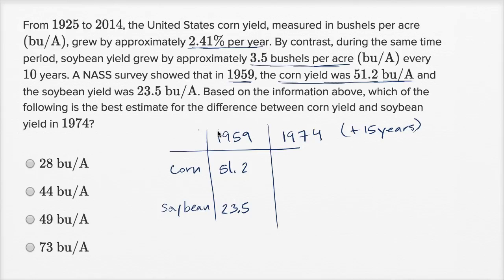So actually, the soybean is a little bit easier to calculate, because they just tell us the absolute number of bushels per acre every 10 years. So 15 years, if you do 3.5 bushels per acre every 10 years, well, 15 years is just going to be half more of that again. So this is just going to be 23.5. So in 10 years, it'll grow by 3.5 bushels per acre, that's what they tell us. And then in another five years, it'll grow by half of this.